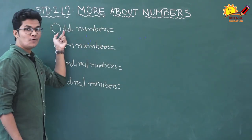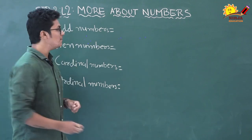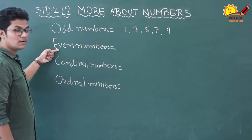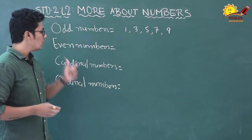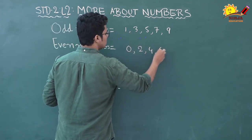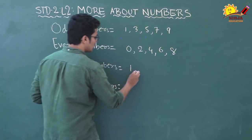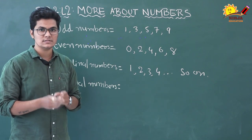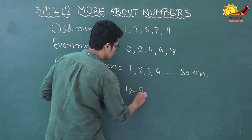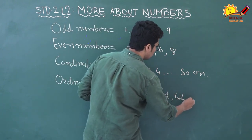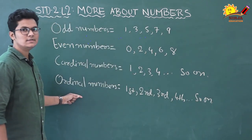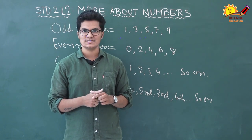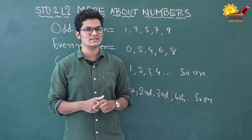Let's quickly recap the chapter. Odd numbers: the number whose ones place has one, three, five, seven, or nine is an odd number. Even numbers: the number whose ones place has zero, two, four, six, or eight is an even number. Cardinal numbers: the normal counting numbers — one, two, three, four and so on. Ordinal numbers: when we tell the position of something — first, second, third, fourth and so on. We will meet in the next video with another chapter. Till then, stay safe, stay at home, and keep learning. Please like, share and subscribe, and don't forget to press the bell icon. Thank you!